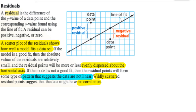A residual is the difference of the y value of the data point and the corresponding y values. The scatter plot of the residuals shows how well the model fits a data set. If the residuals are evenly dispersed about the horizontal axis, it is a good fit.